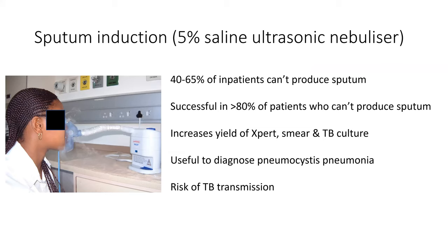I want to spend a little time on sputum induction — if there's one thing you take away from this, get your hospital to do this. Sputum induction uses 5% saline driven by an ultrasonic nebuliser. Five percent saline is on the Essential Medicines List, so all hospitals should be able to order it. The machine is cheap — a couple of thousand — though the tubing needs single-use disposal. Between 40 and 65% of patients — in our study 65%, because they were really sick with danger signs — are just too weak to cough and cannot produce sputum. That's a big deal when your best diagnostic test depends on sputum.